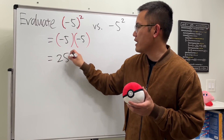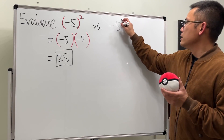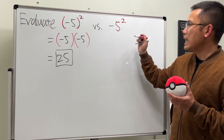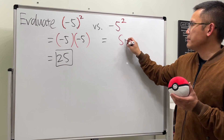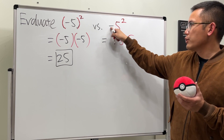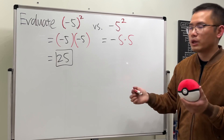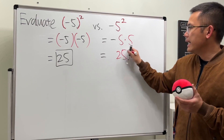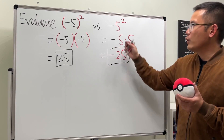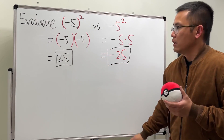The answer is positive 25. However, for the second one without parentheses, the notation means the exponent 2 is only for the 5. So we do 5 times 5, but we do have the negative in front — just bring that down. 5 times 5 gives us 25, and then we still have the negative, so the answer is negative 25. That's the big difference.